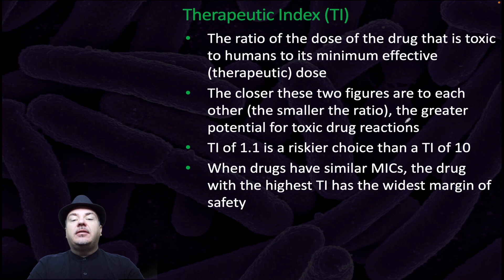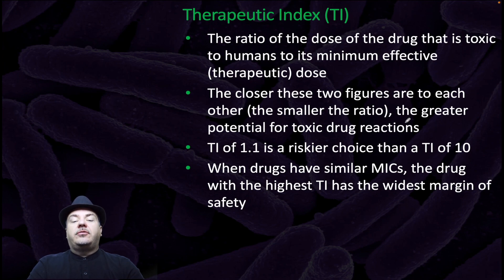Therapeutic index, or TI, is the ratio of the dose of the drug that is toxic to humans to its minimum effective or therapeutic dose. The closer these two figures are to each other — the smaller the ratio — the greater the potential for toxic drug interactions. A TI of 1.1 is a much riskier choice compared to a TI of 10. When drugs have similar MICs, the drug with the highest TI has the widest margin of safety.